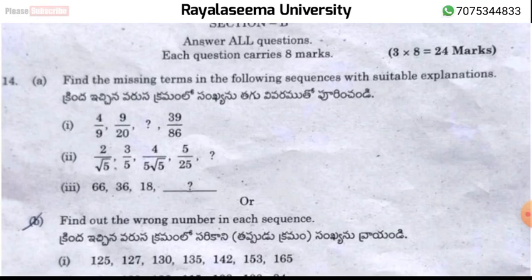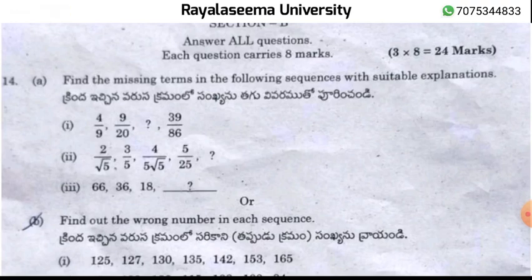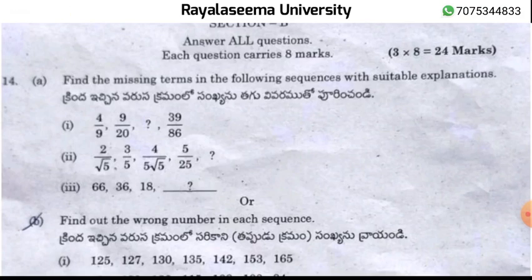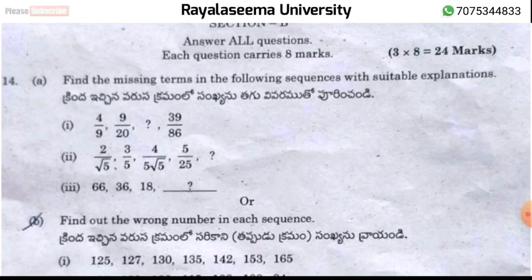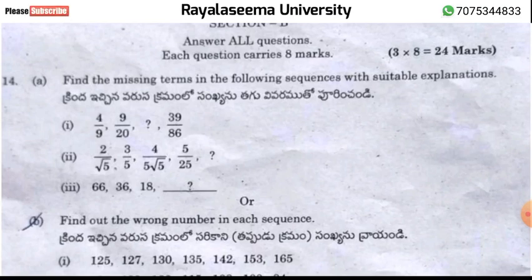Section B, Question 14 has multiple parts. First: the series 4/9, 9/20 — the pattern involves numerator and denominator each increasing by 5, giving the answer 19/42. Second: the series 2/√5, 3/5, 4/√5, 5/5 — rationalizing gives the answer 1/√5.